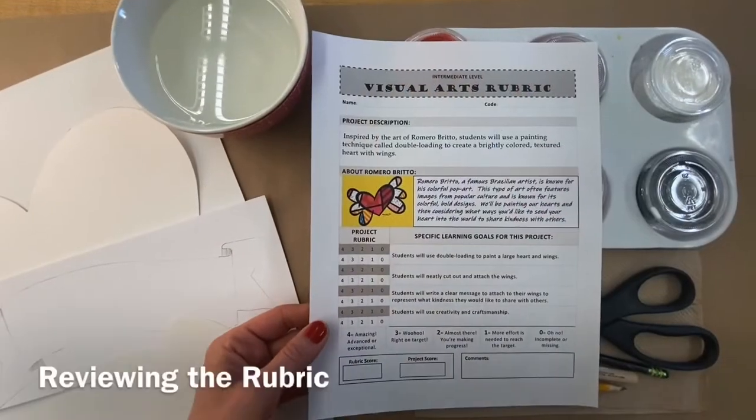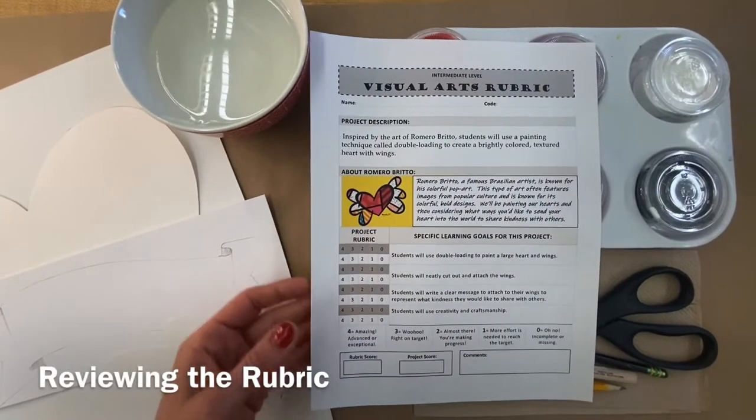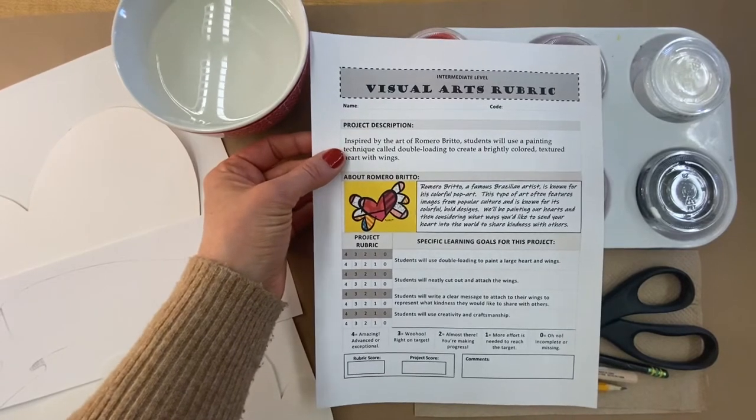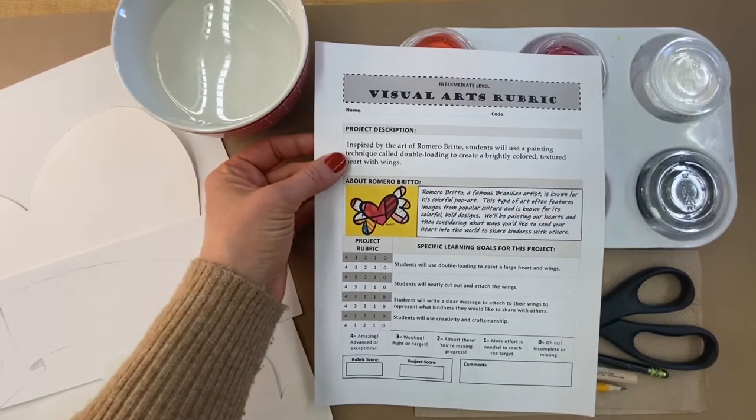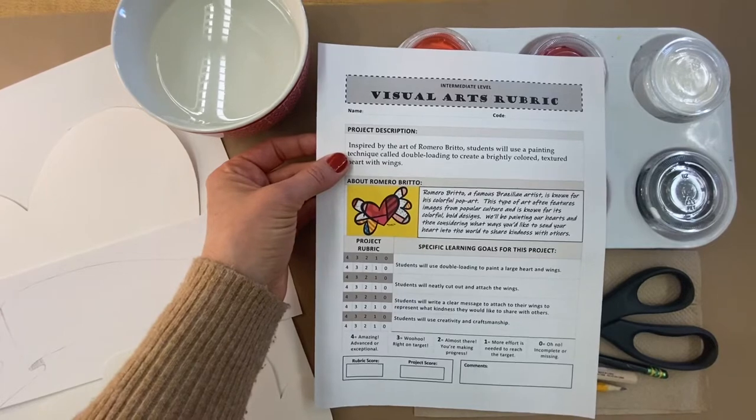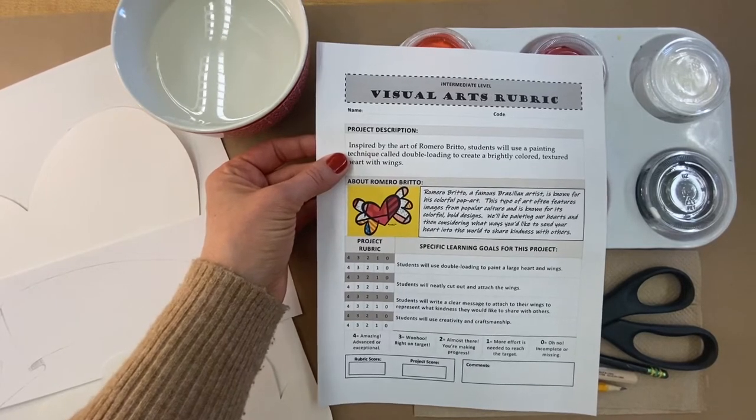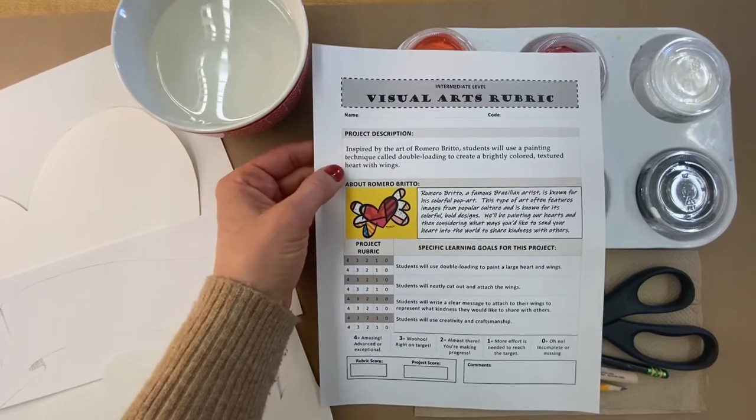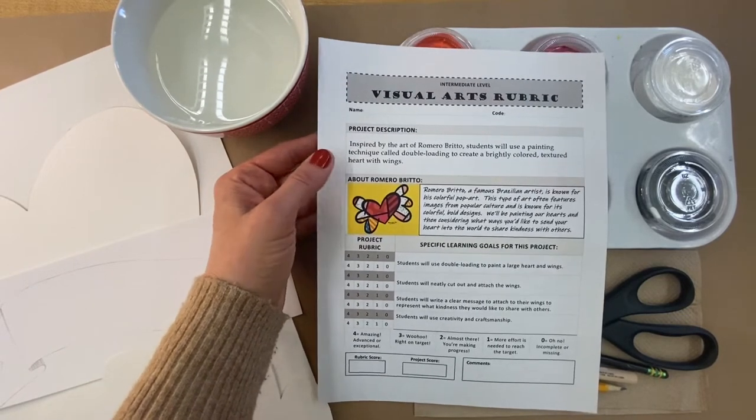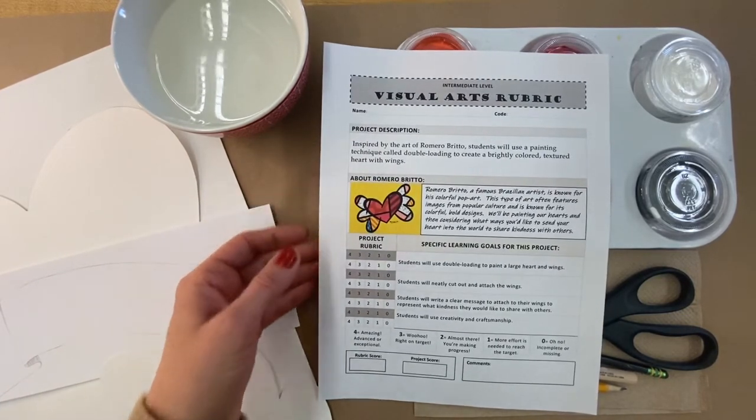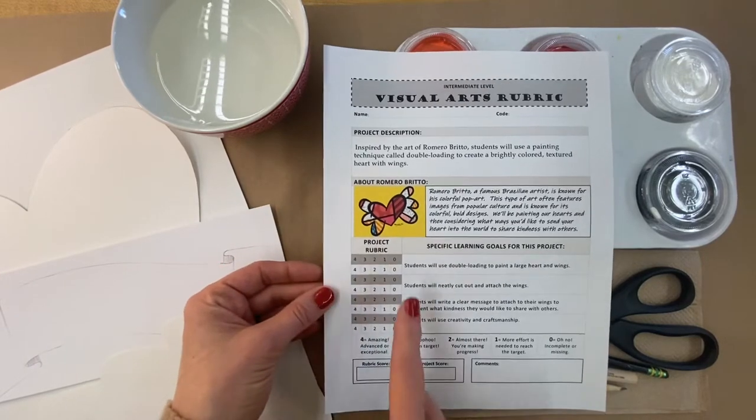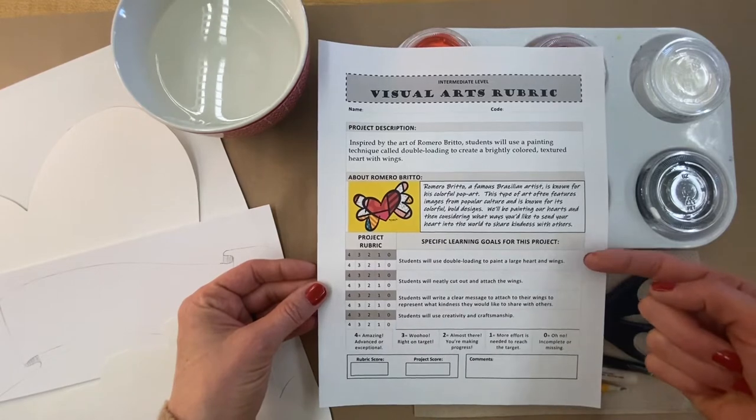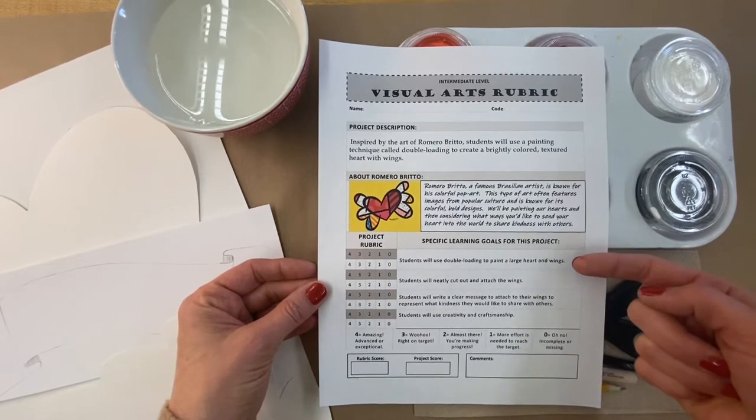Let's take a closer look at the rubric. Our description for this project is: inspired by the art of Romero Brito, students will use a painting technique called double loading. I love this to create a brightly colored textured heart with wings.